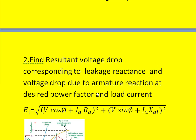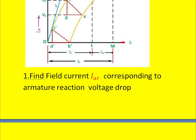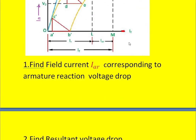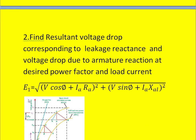Now assume the load current is IA and its power factor angle is phi, lagging with respect to the terminal voltage. We write the generated EMF per phase E1 as: square root of (V cos phi + IA·X_AL)² + (V sin phi + IA·X_AL)². The value of IA·X_AL is already known from the graph, and the other values are known from the OC and SC tests. Substituting them gives us the E1 value.